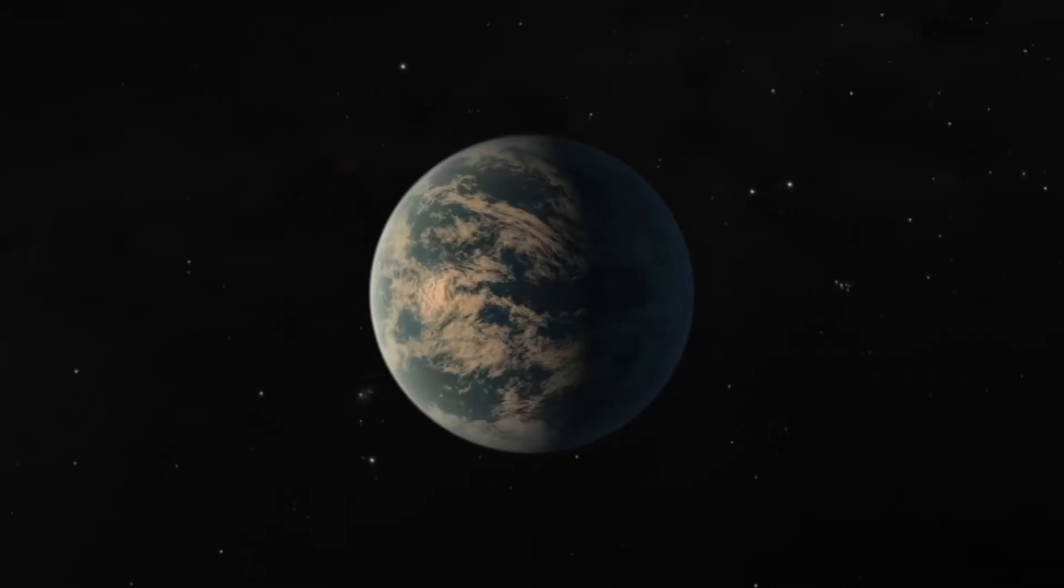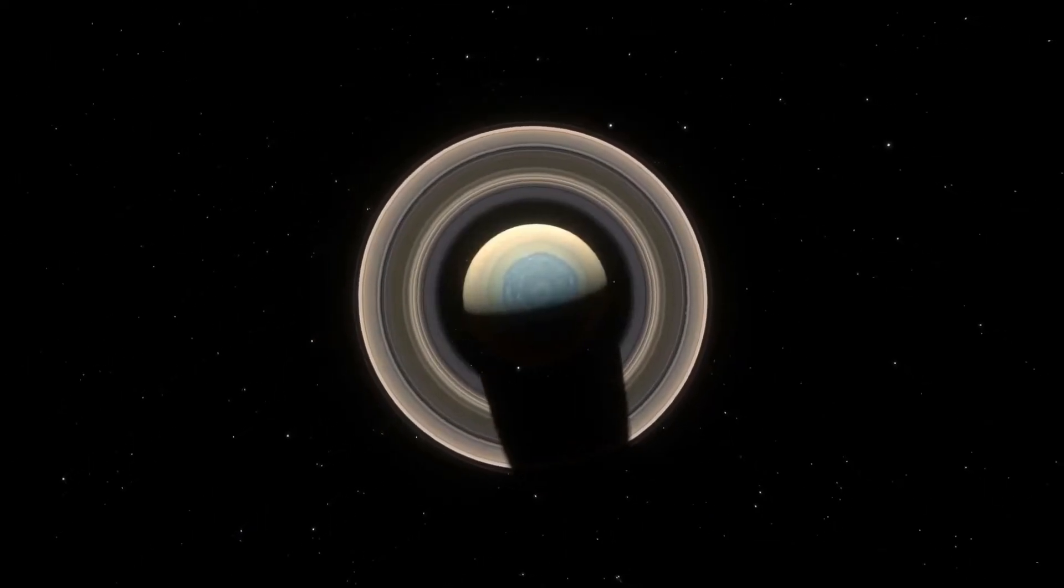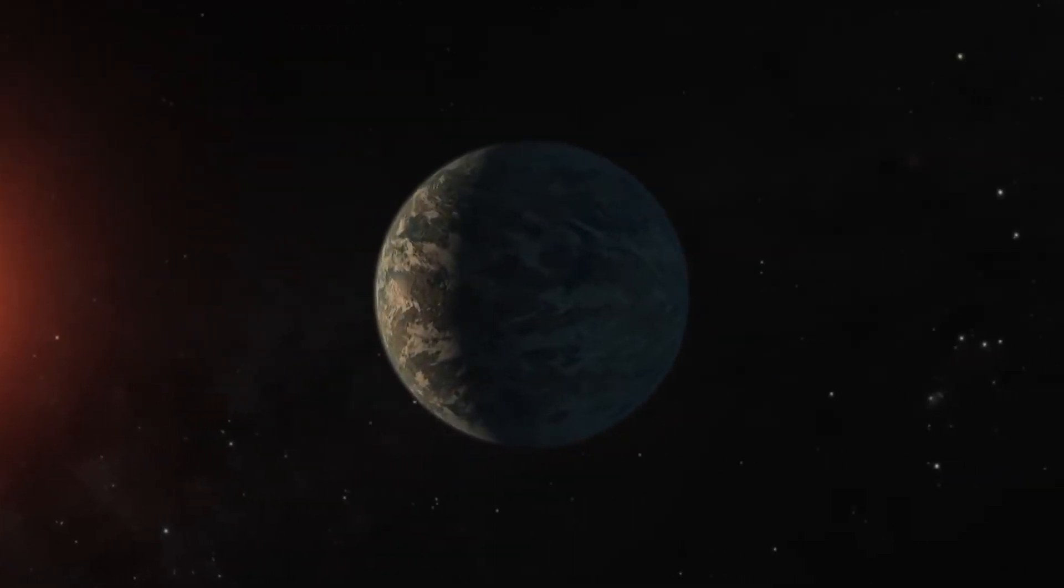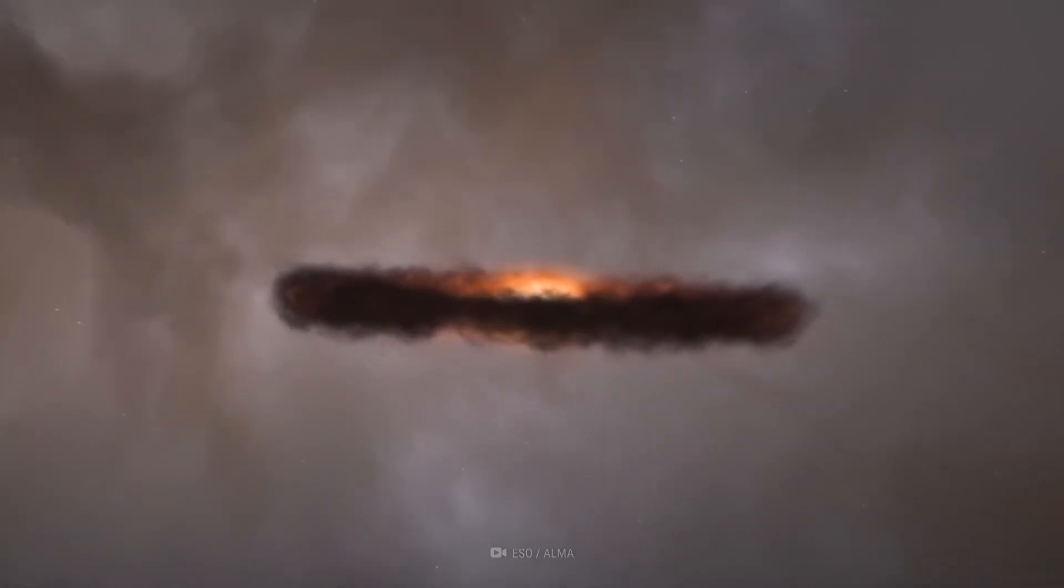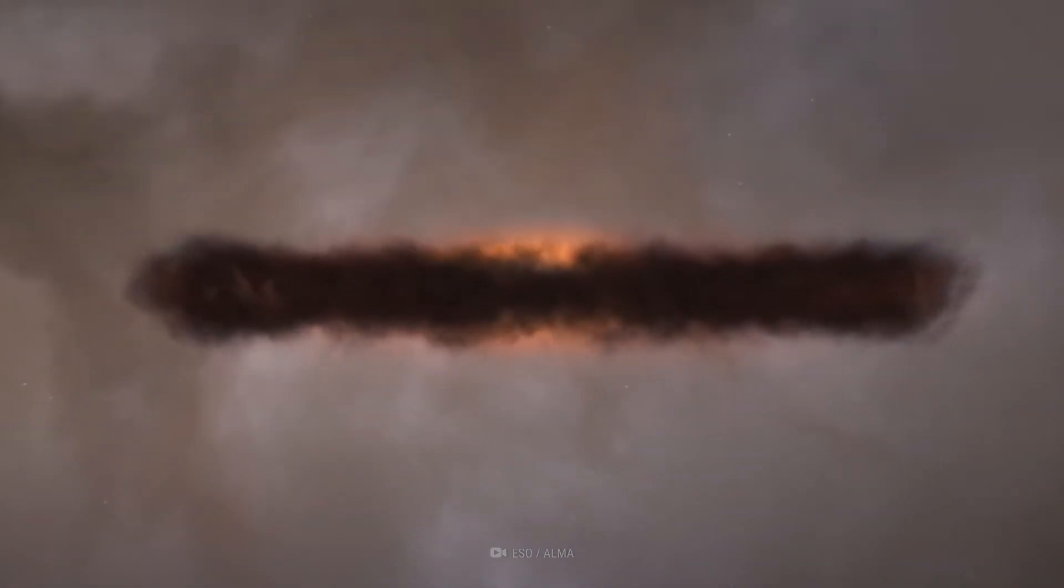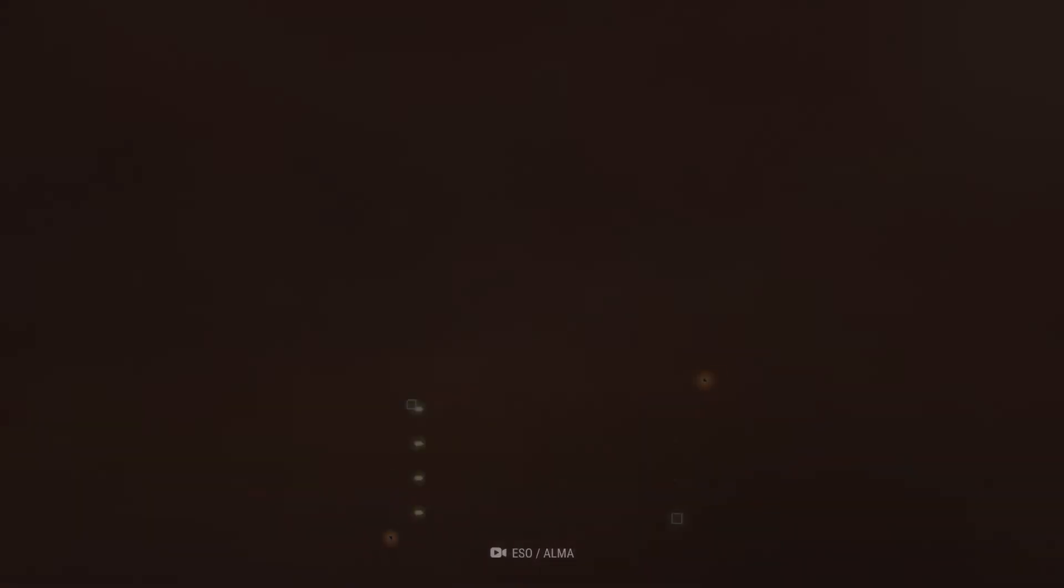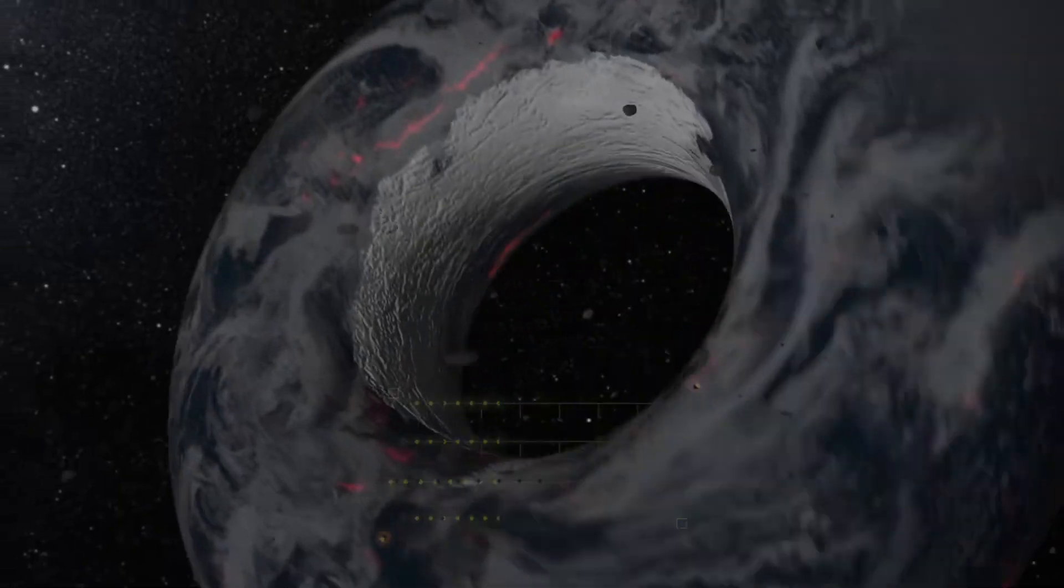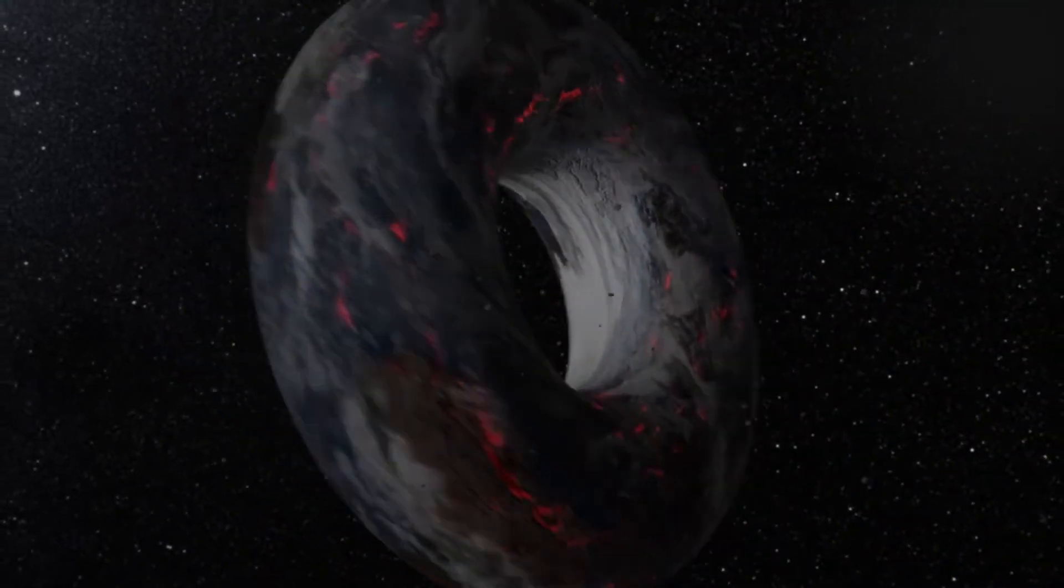We think of planets as round balls of matter floating out in space, partly because this has been true for all of the planets we have been able to spot. But some scientists have begun to see a new shape of planet pop up in their models of the Universe. In very specific gravitational situations, a planet may form into a doughnut shape called a toroid in the very early stages of its formation. This newly theorized planetary shape is called a synestia.